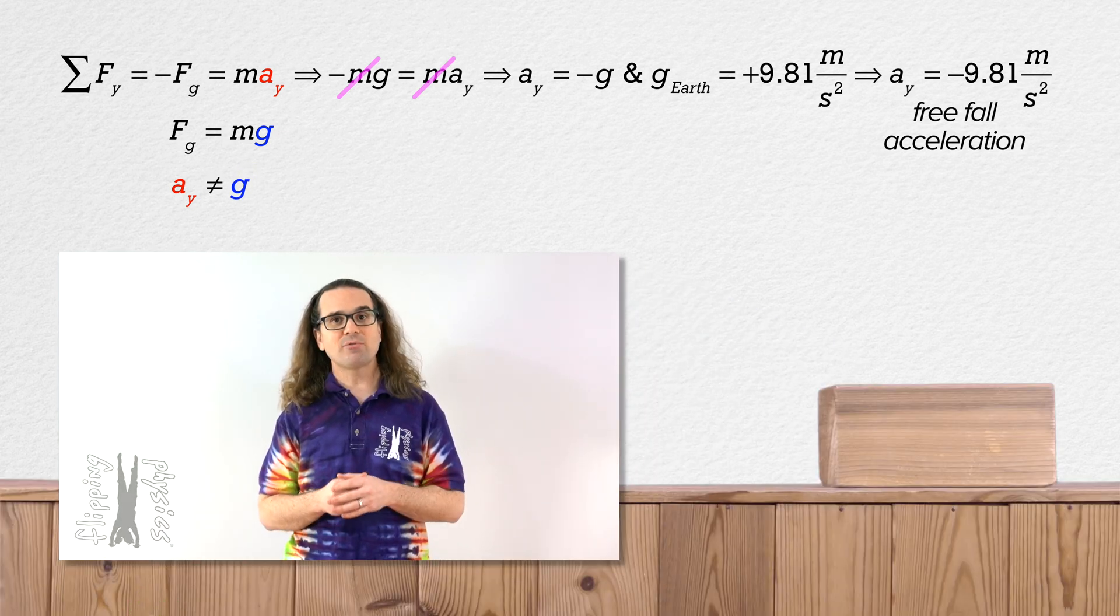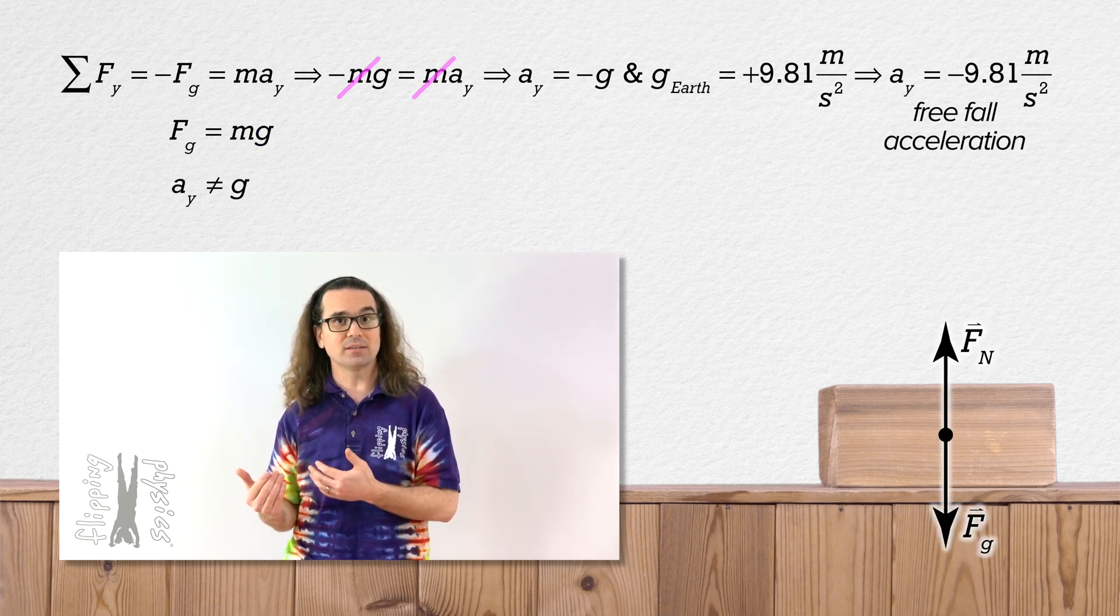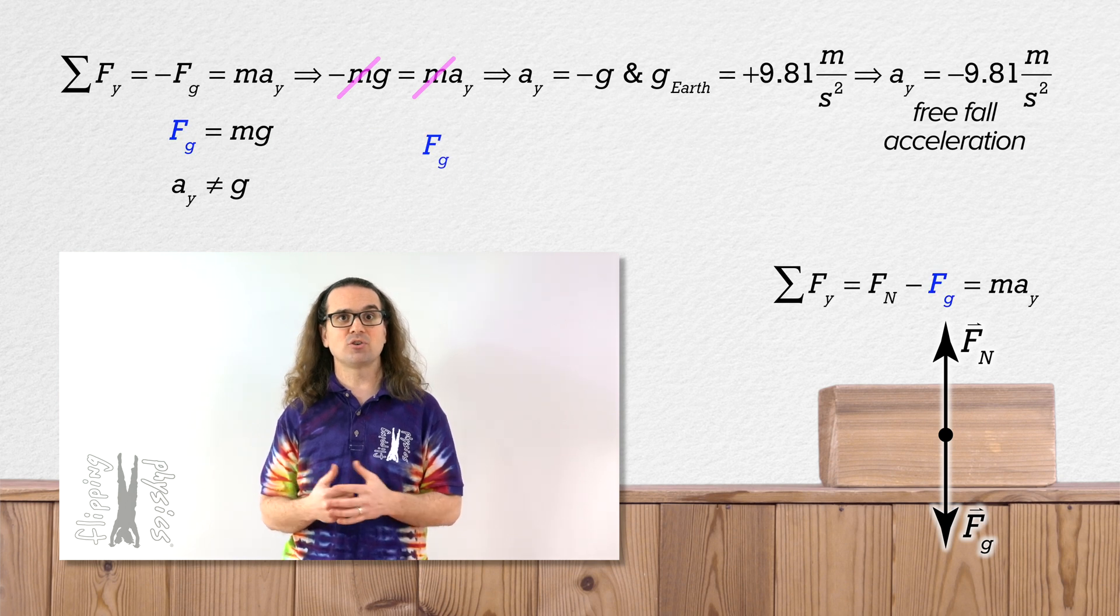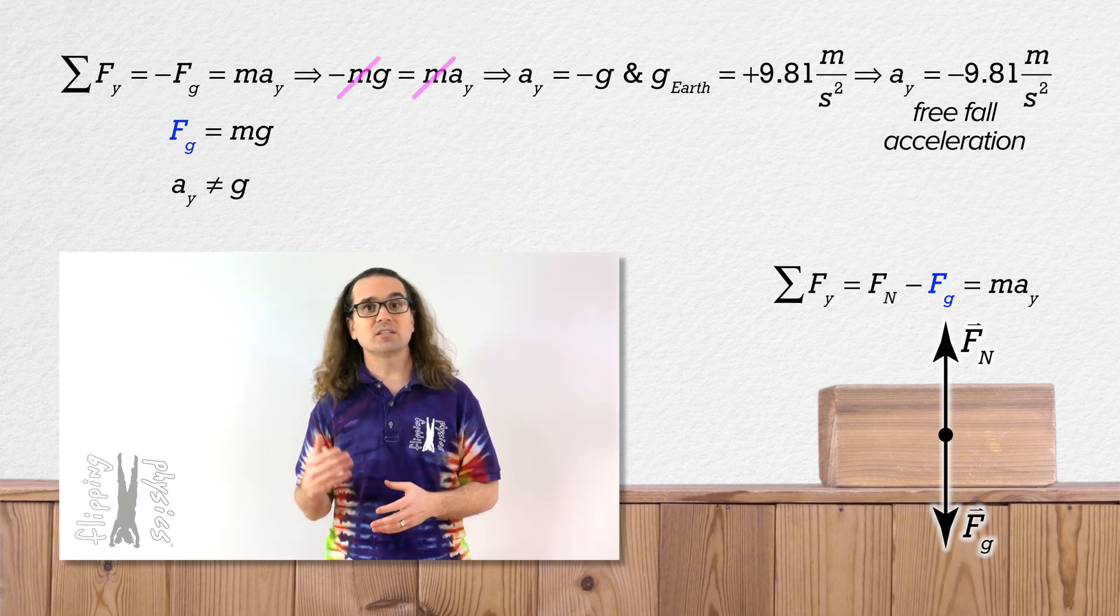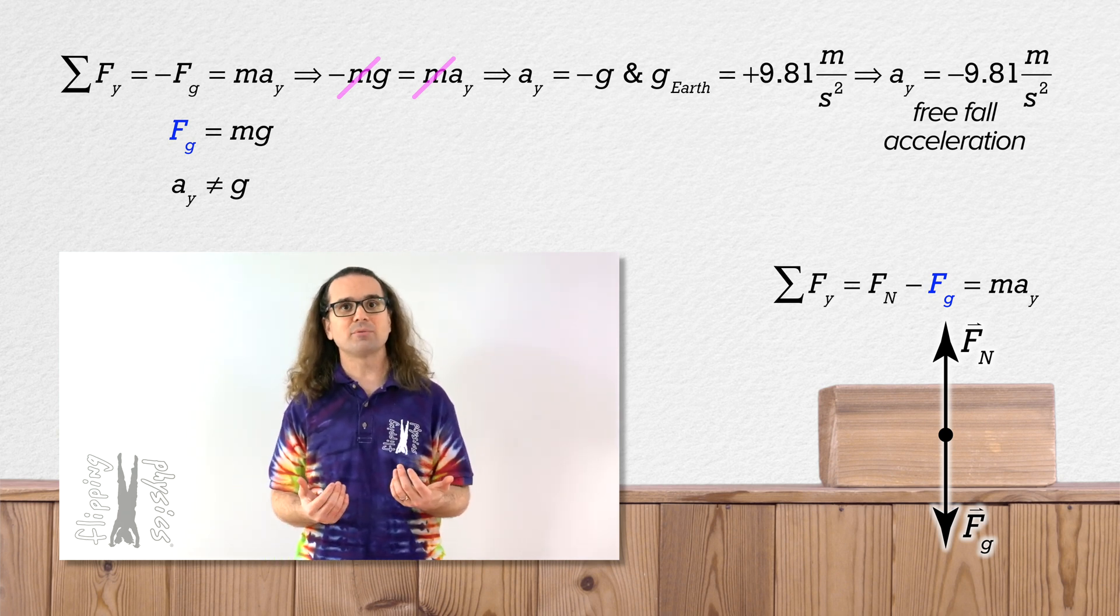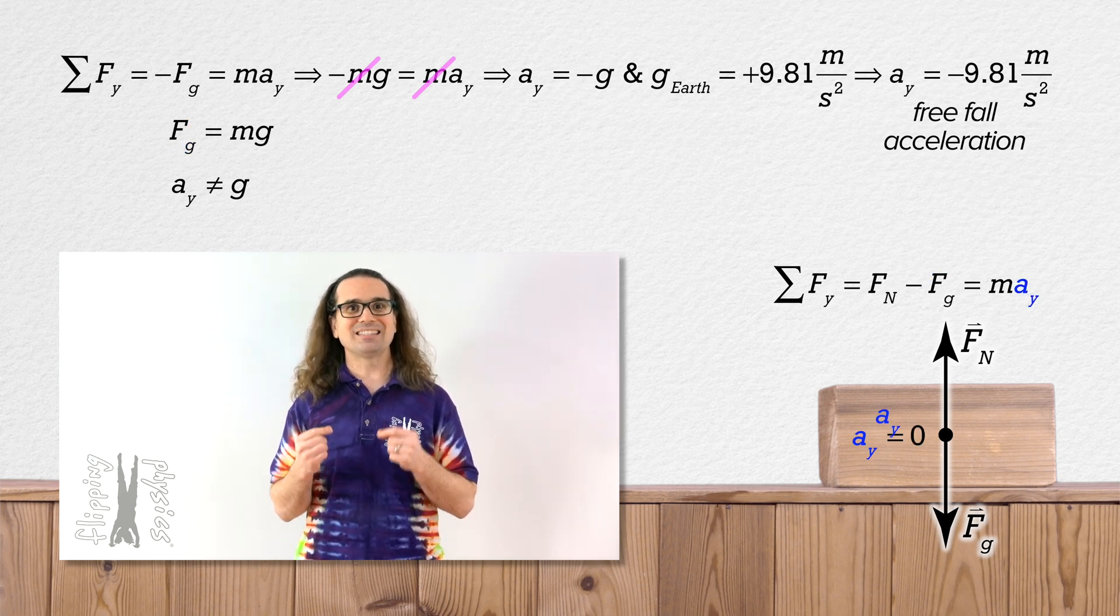Notice that an object at rest on a surface will still have the force of gravity acting downward on it. You still multiply mass times the acceleration due to gravity to get the magnitude of the force of gravity acting on the object. However, in this case, because a force normal acts upward on the object, preventing the object from falling through the table, the acceleration of the object is zero.